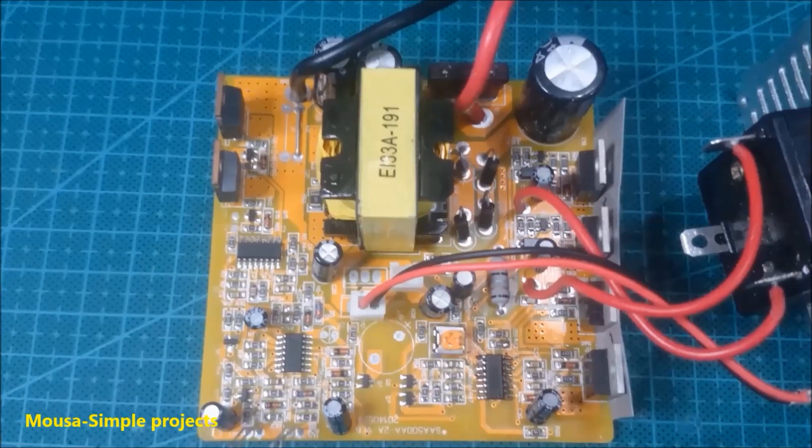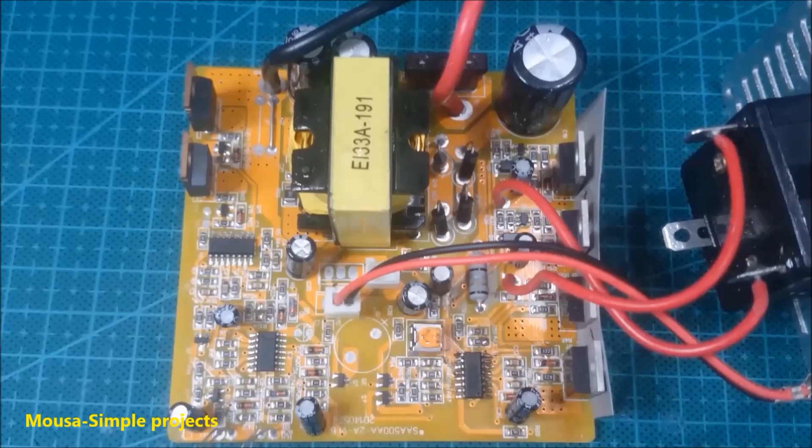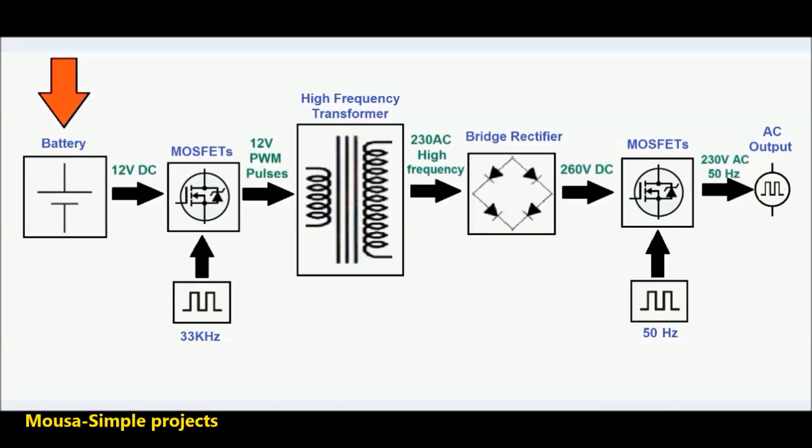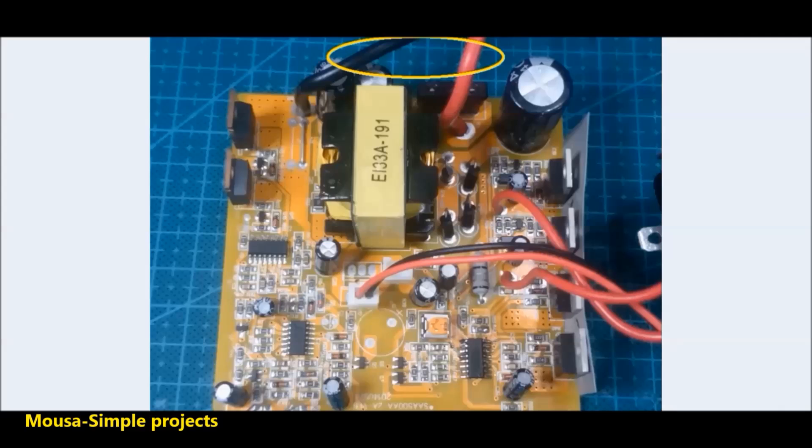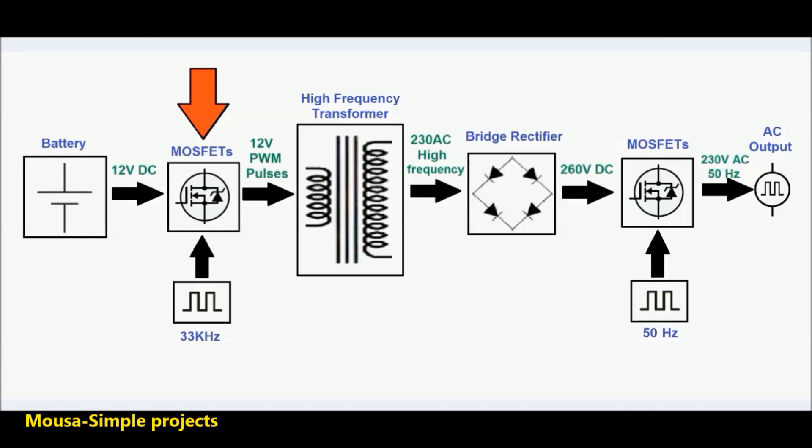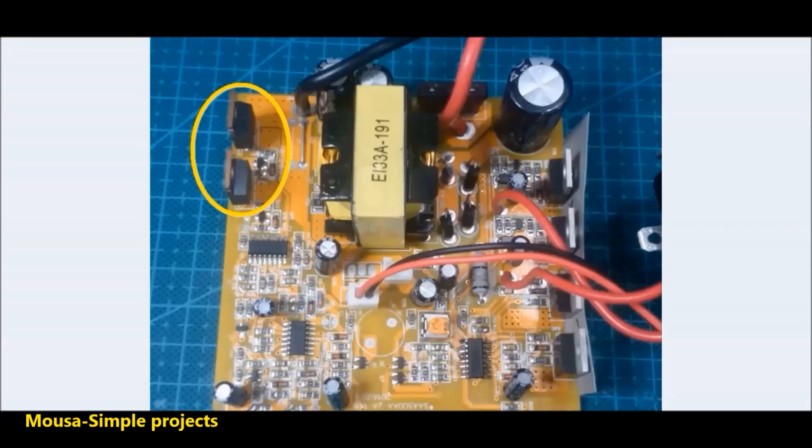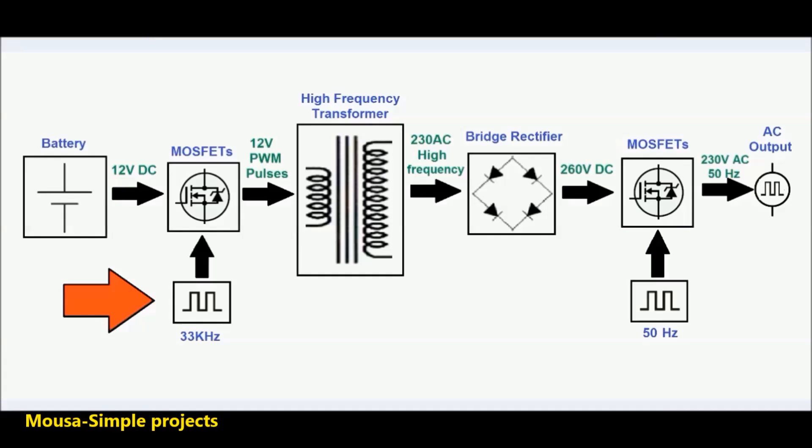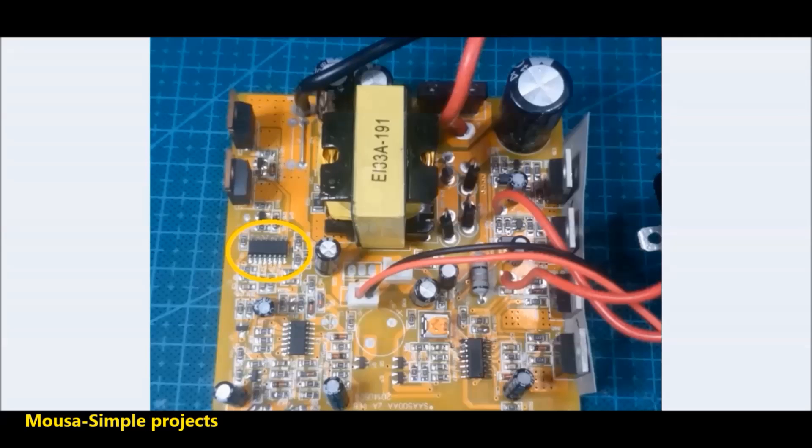First of all, you have to know how this inverter works. First, the 12 volt DC comes from your battery, connected to this couple of MOSFETs. The gates of the MOSFETs connected to a PWM generator IC switching the frequency in this case is 33 kHz.